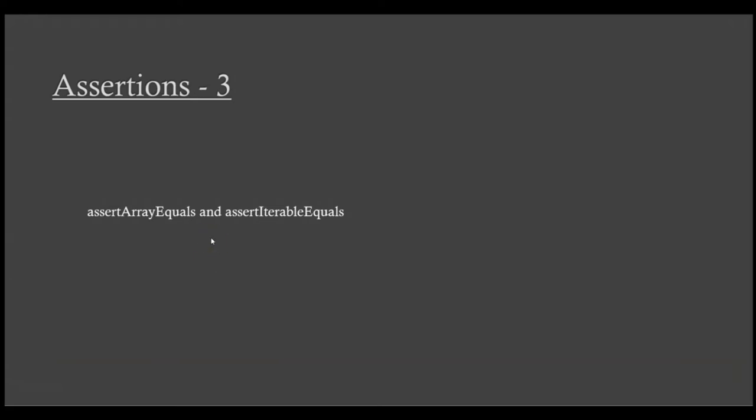In our case, we use the add method of the calculator class and pass null values to it, and check whether the method indeed throws a NullPointerException. So write assertThrows(NullPointerException.class, () -> calculator.add(null, null)). Run this test and check whether it's a success. Until now, you have written assertions in test cases for scalar types.